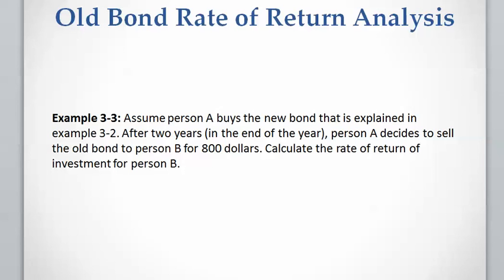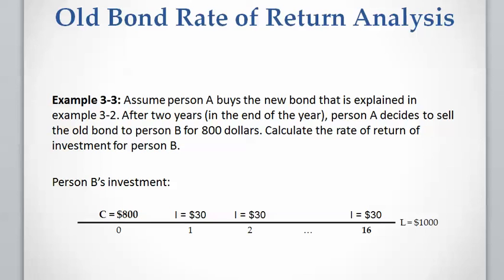Now let's work on another example: old bond rate of return analysis. Let's assume Person A buys the new bond described in the previous example, and then wants to sell the bond after two years to Person B at $800. We'll calculate the rate of return on this investment for Person B. The first thing we do is draw the timeline. Because Person A is selling the bond after two years, Person B will have 16 periods of six months.